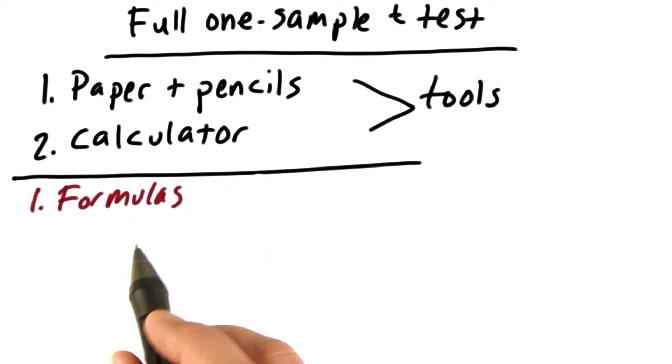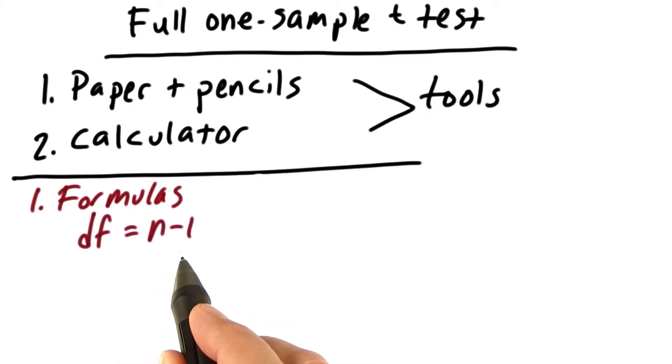You're going to need the following formulas. Write them down on a separate sheet of paper and keep them handy throughout this example. You're going to need the degrees of freedom, n minus 1. You'll also need the standard error of the mean, which is the sample standard deviation divided by the square root of the sample size.